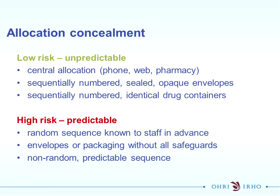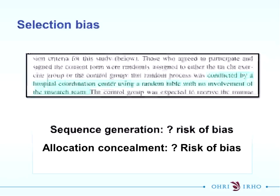Allocation concealment is also at the beginning of the trial and avoids selection bias. This is when people are recruited to the study and ensuring that no one knows which group they've been allocated to. For low risk of bias, it has to be unpredictable - so central allocation or sequentially numbered, sealed, opaque envelopes. High risk means that someone on staff or otherwise can predict the random sequence - for example, if a centrally randomised list is posted on a wall for which patient is coming in next.